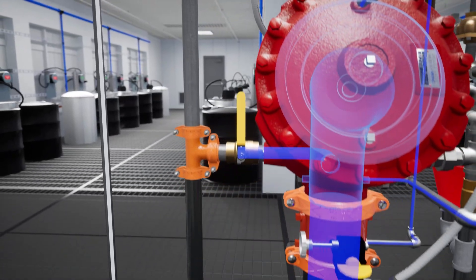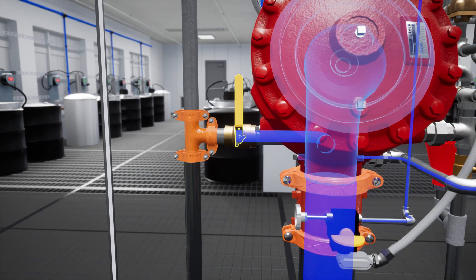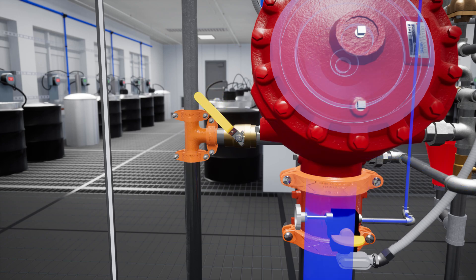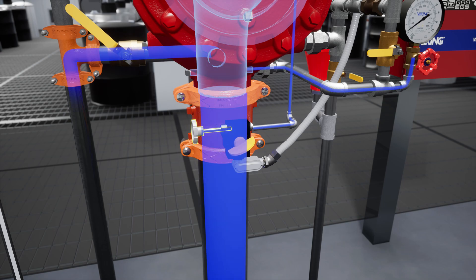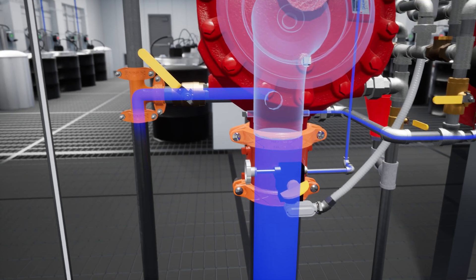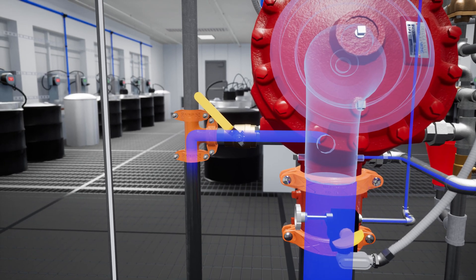Once priming pressure is reestablished in the priming chamber, slightly open the flow test valve. Then slightly open the water supply control valve. Once flow has been established, close the flow test valve completely.